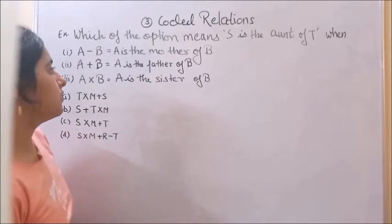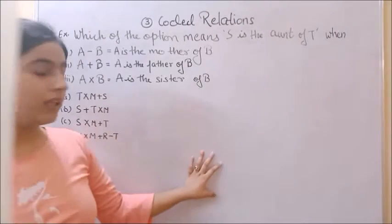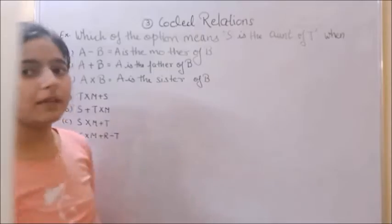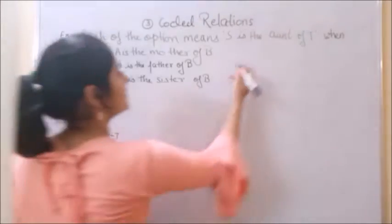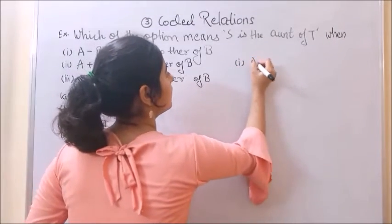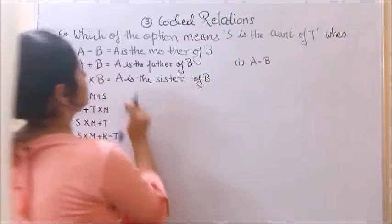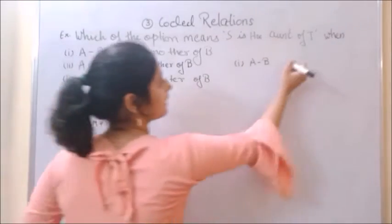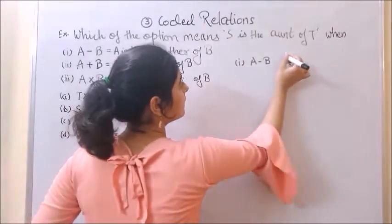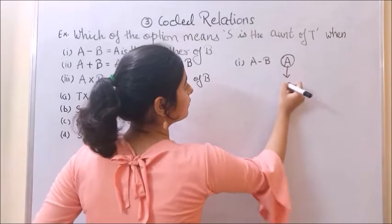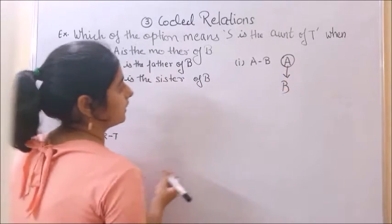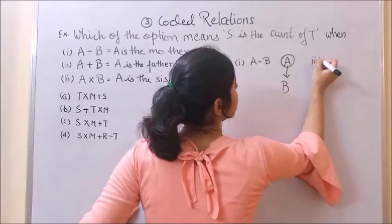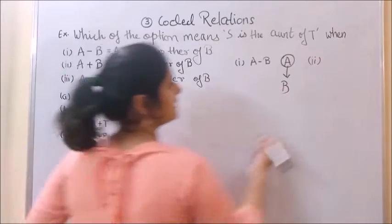First, we will convert this coded information into symbols. First is A minus B, which is A is the mother of B. A is female, mother of B. Second is A plus B.